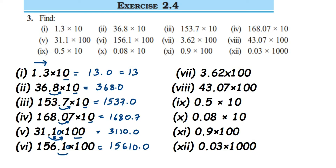The seventh one: again we have 100, so the decimal moves towards the right side after two digits. This will become 362.0. The next one: again 100, we move the decimal two digits to the right. This will become 4307.0.